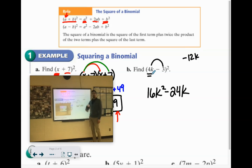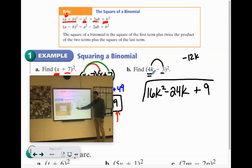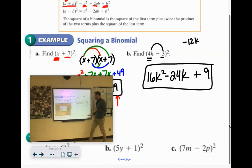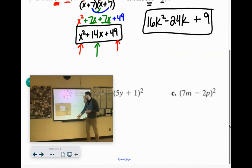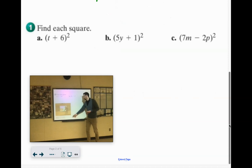The last term is always plus, because if it's a positive times positive, it's positive. If it's a negative times negative, it's positive. 3 squared is 9, 3 times 3. If you can't remember, write it twice and FOIL it. But we're going to practice these three with the shortcut.